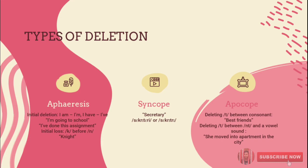The second type is syncope. Syncope is word-internal deletion. The term is most frequently used with vowel loss, but some writers extend it to consonants as well. For example, the word 'secretary' may be pronounced as 'secretary' — with the middle syllable reduced.